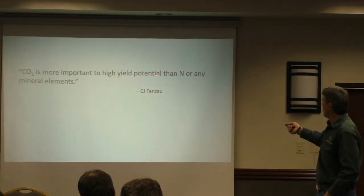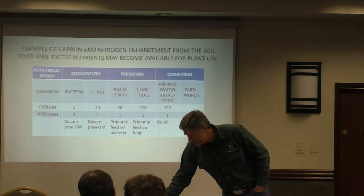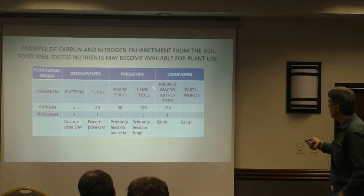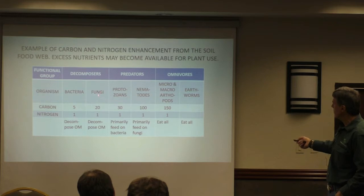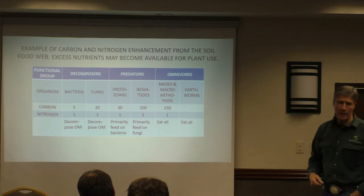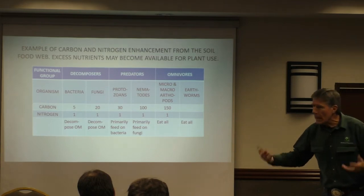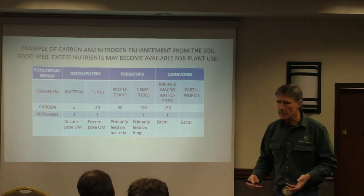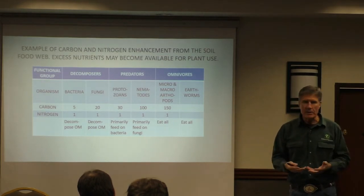CO2 is more important to high yield than any other mineral. This is how nature works. Our bacteria, on average, is 5 carbons to one nitrogen. Fungi: 20 carbons to one nitrogen. Then protozoa, nematode, micro and macro arthropods — all these guys have different nitrogen-carbon-mineral ratios. This is the fascinating part about how this biology system was put together.